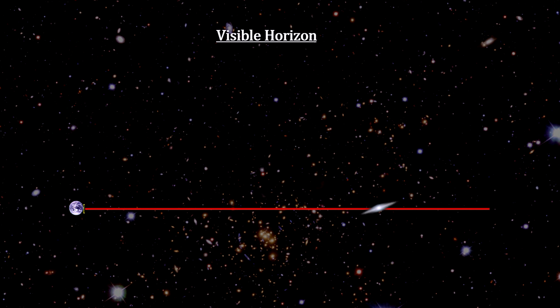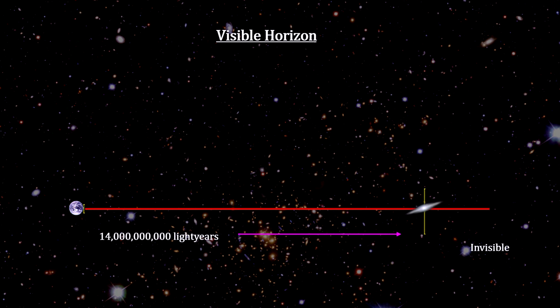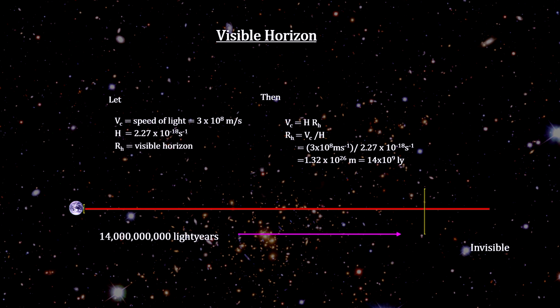If a galaxy is far enough away, its apparent velocity will be faster than the speed of light, and its light would never reach us — it would be beyond the physical visible horizon of the universe. It's not that it is moving through space that fast; it's that more space is being created per second between us and that galaxy than light can traverse in one second. Plugging in the numbers, all galaxies beyond 14 billion light years could never be seen here. GNZ-11 is now 32 billion light years away, so light leaving it now will never reach us.